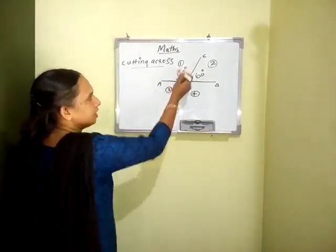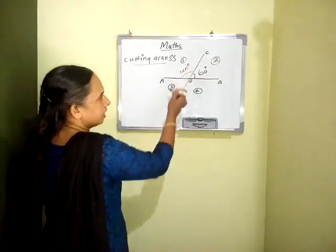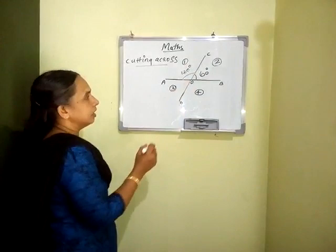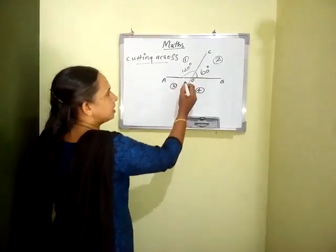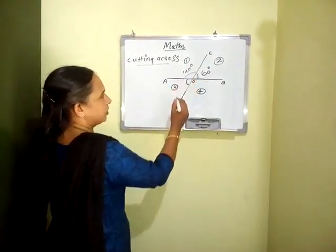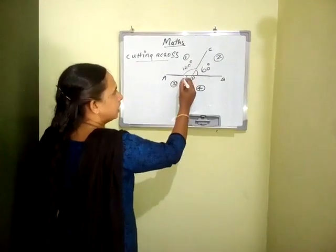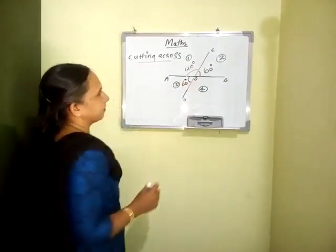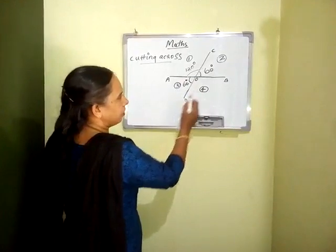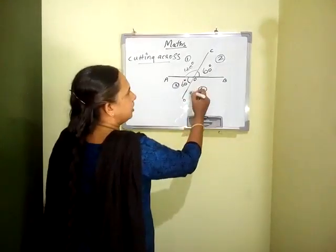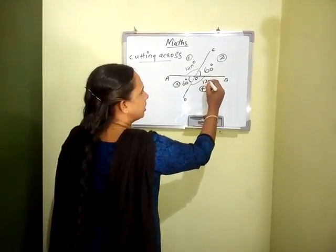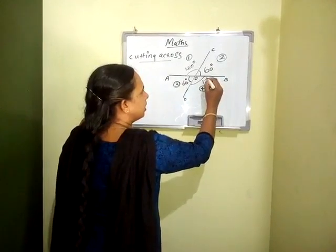Then, considering angle 1 and angle 3: angle 1 equals 120 degrees, so angle AOD is equal to 180 minus 120, that is 60 degrees. Then, considering angles 3 and 4, angle DOB equals 120 degrees.